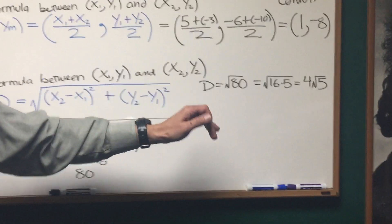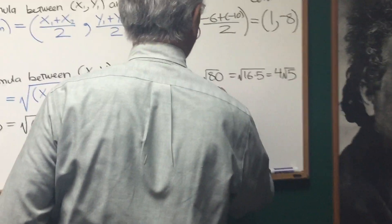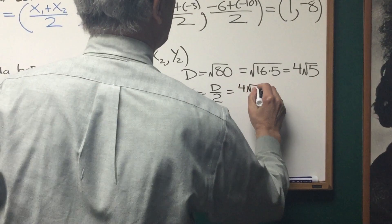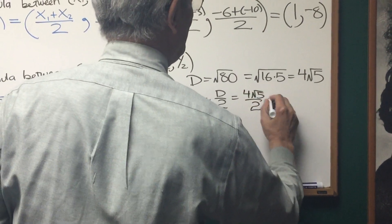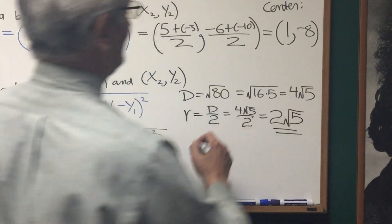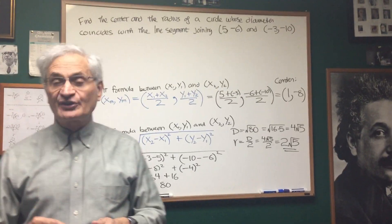Now, that's the diameter. The problem asks for the radius, the radius is simply going to be the diameter divided by 2, or 4√5 divided by 2, and that's 2√5. So, there we have it. We have the center and the radius from the given coordinates of the endpoints of the diameter.